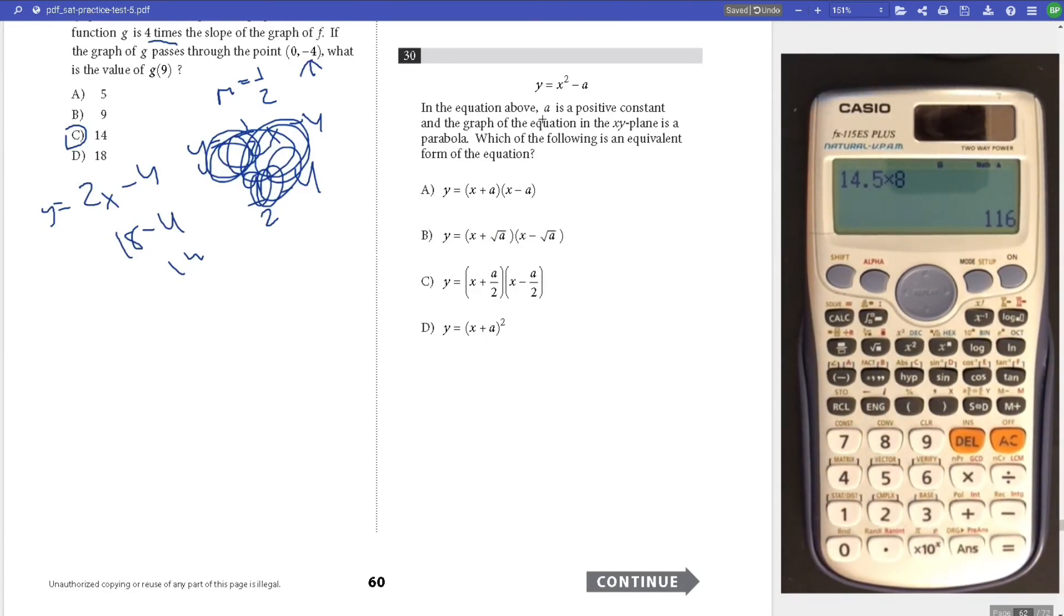Number 30, we're given Y equals X squared minus a. If a is a positive constant and the graph is a parabola, which is equivalent? This is a difference of squares. When you take the square root of both sides, you get the difference of squares factored form. Answer is B. That's just something you have to know, a special rule.